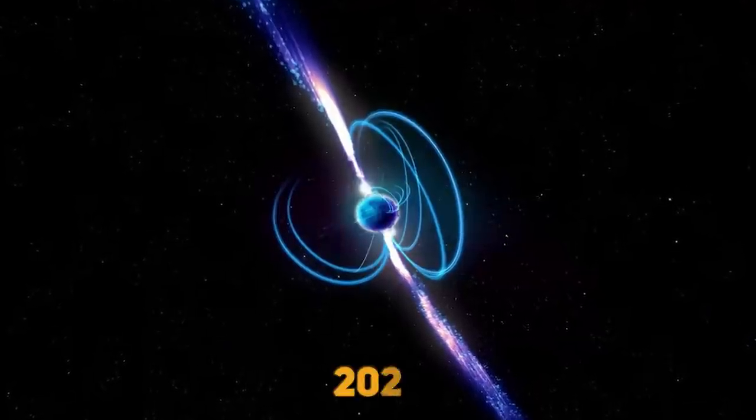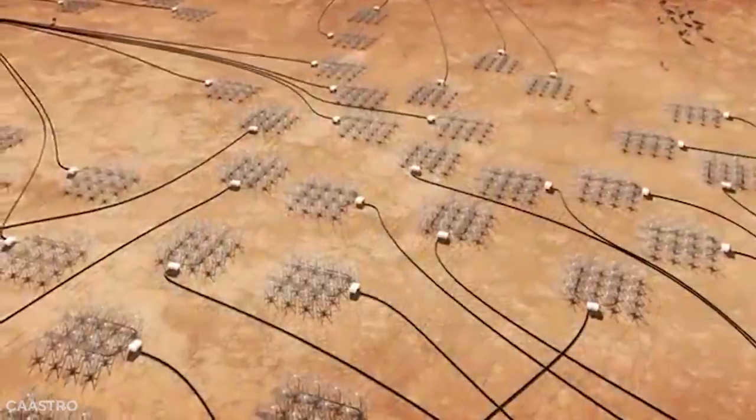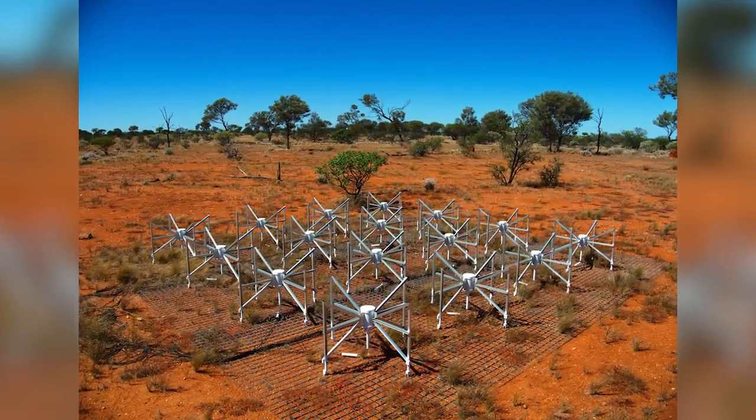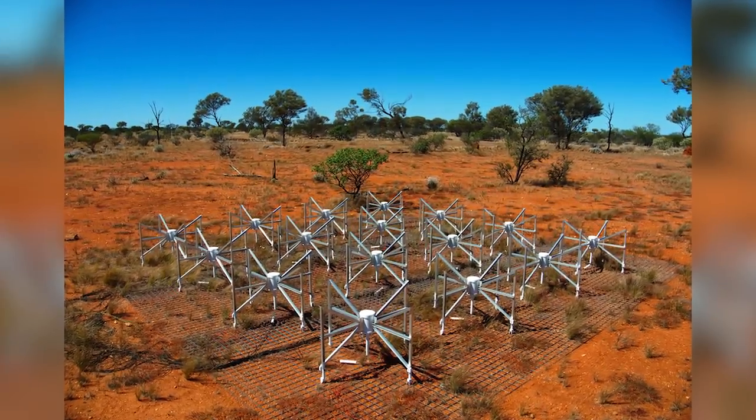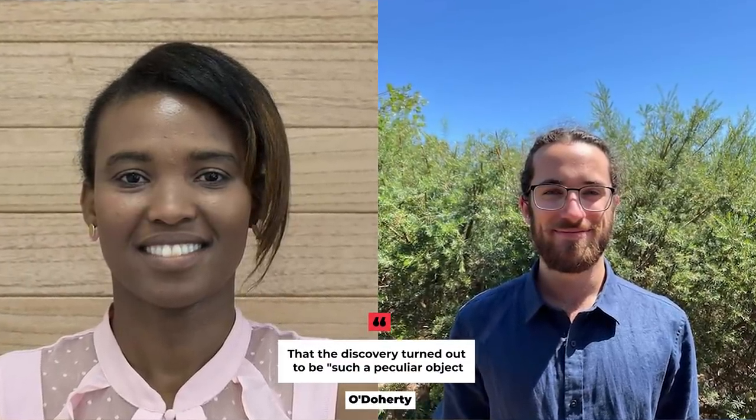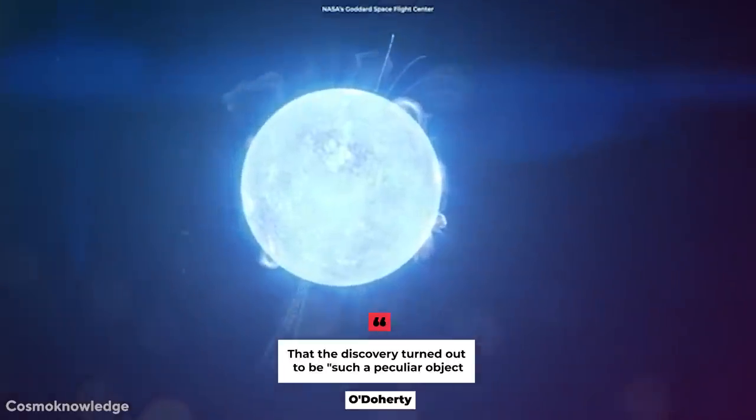The object was first discovered in March 2018 by Curtin doctoral student Tyrone O'Doherty using the Murchison Wide Field Array Telescope in outback Western Australia. The multi-million dollar telescope has a wide frequency and range field of view, making it possible to spot something so far away. O'Doherty said it was exciting that the discovery turned out to be such a peculiar object.